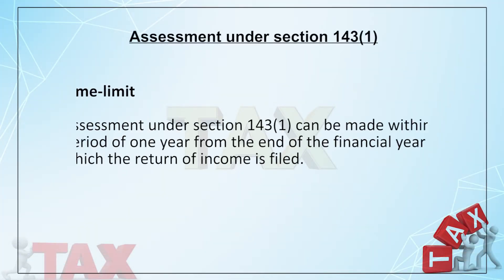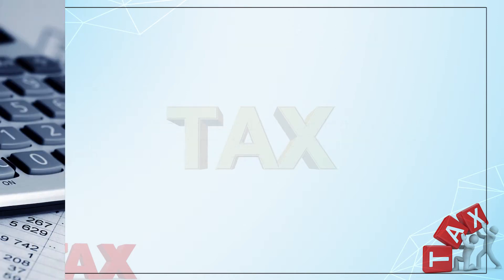The assessment under Section 143(1) must be completed within a defined timeline — it cannot be indefinite. It can be made within a period of one year from the end of the financial year in which the return of income was filed. For example, if the return was filed in June 2018, the financial year is 2018-19, and the assessing officer can issue the Section 143(1) assessment order up to 31st March 2020.